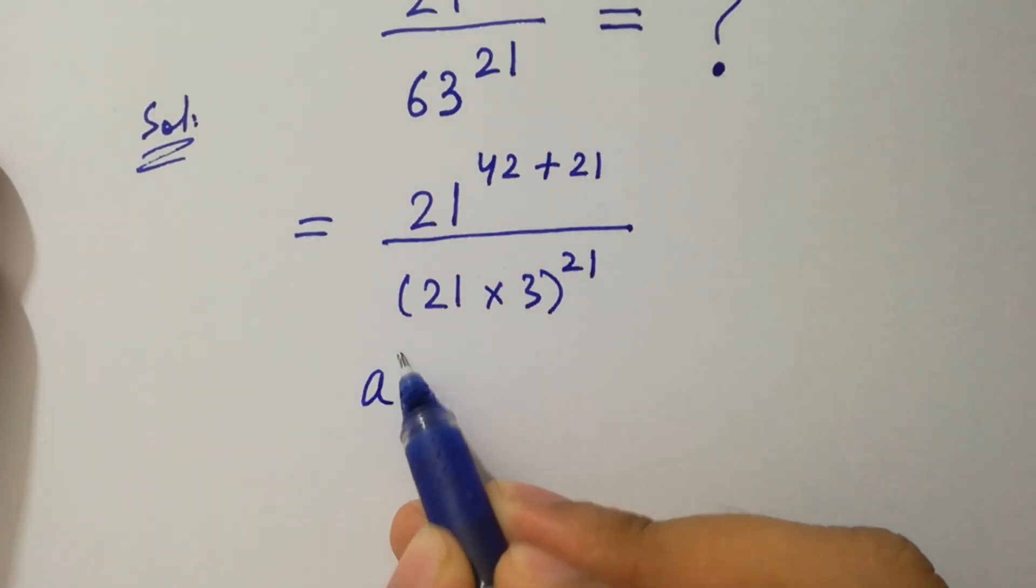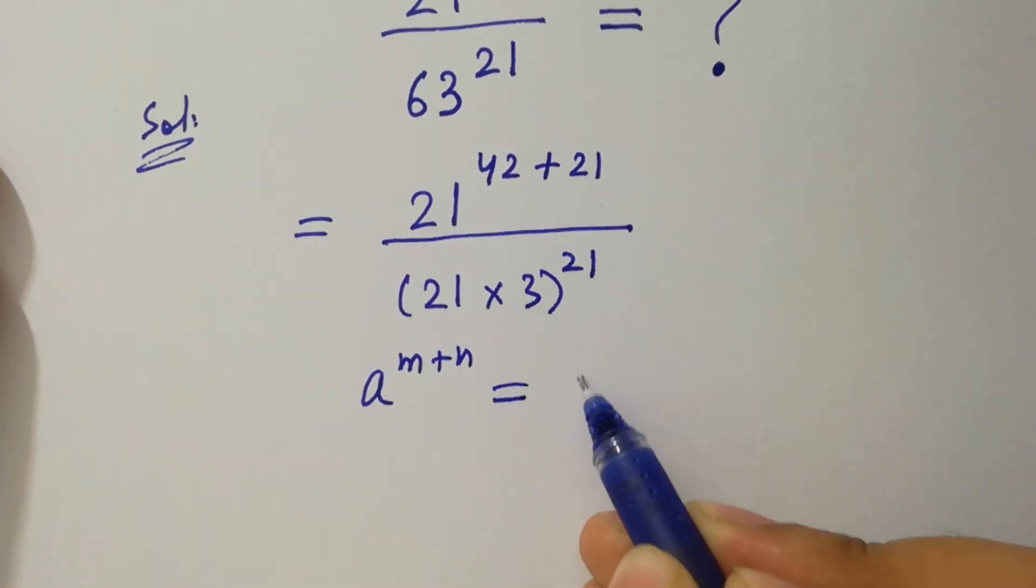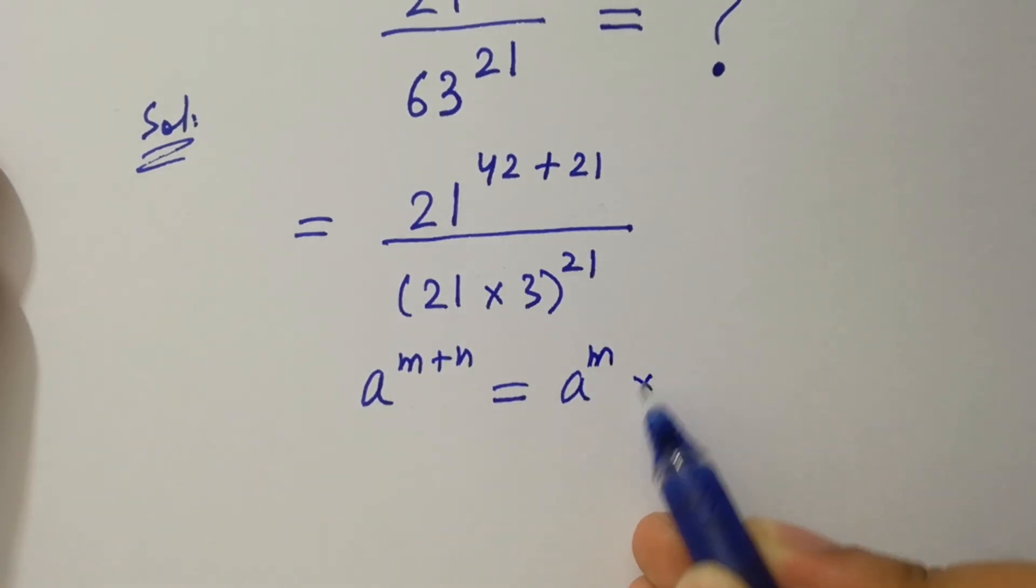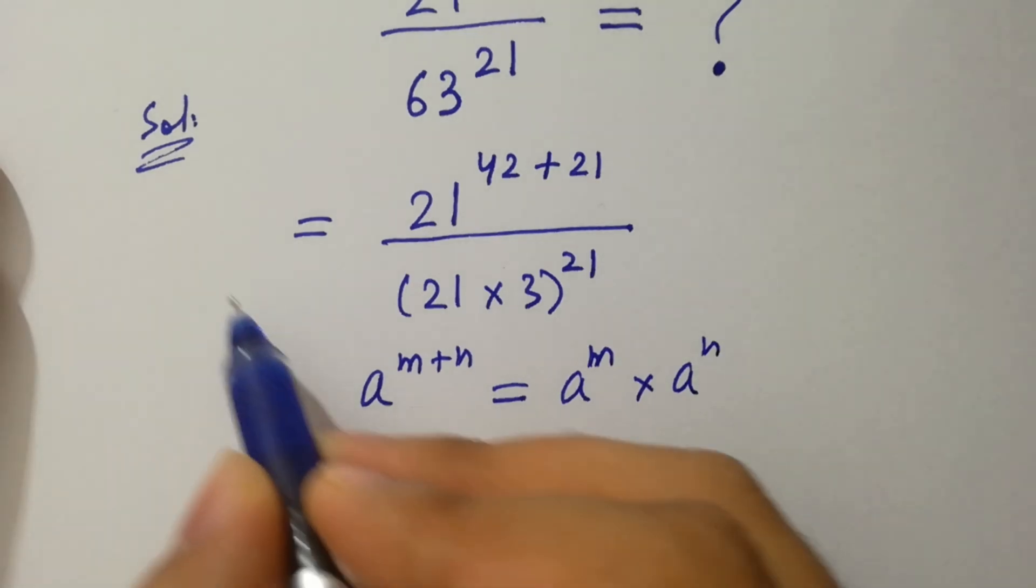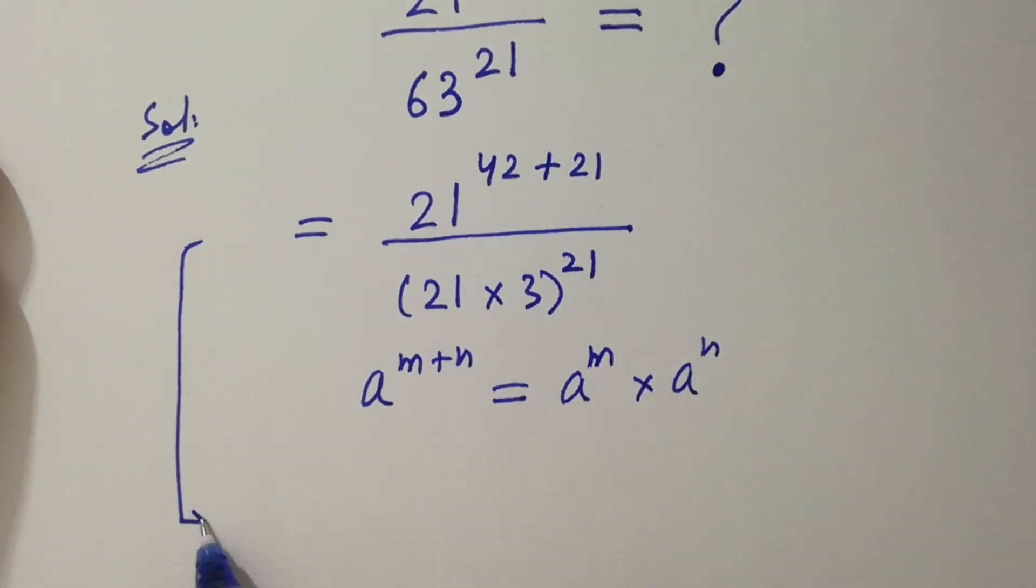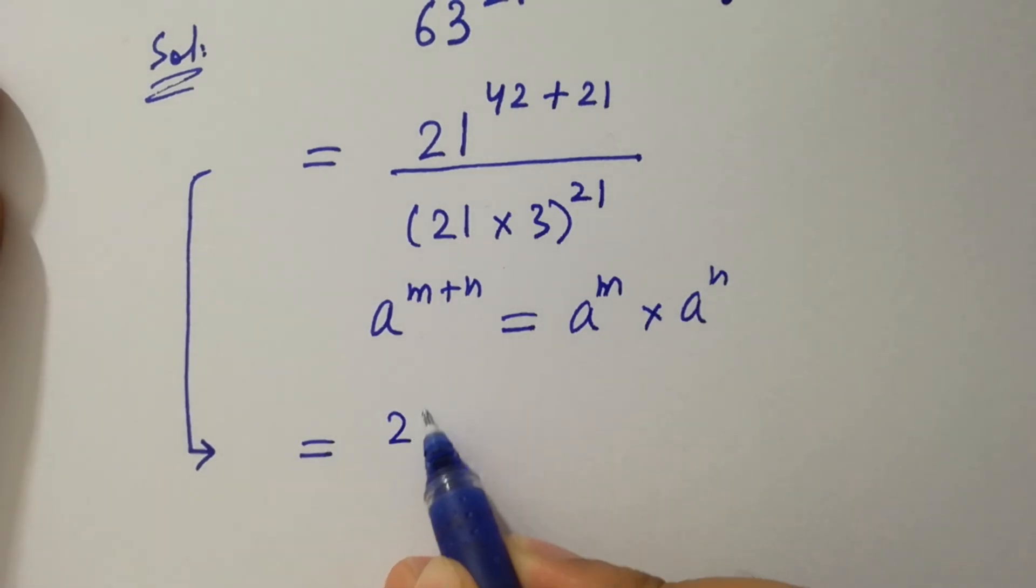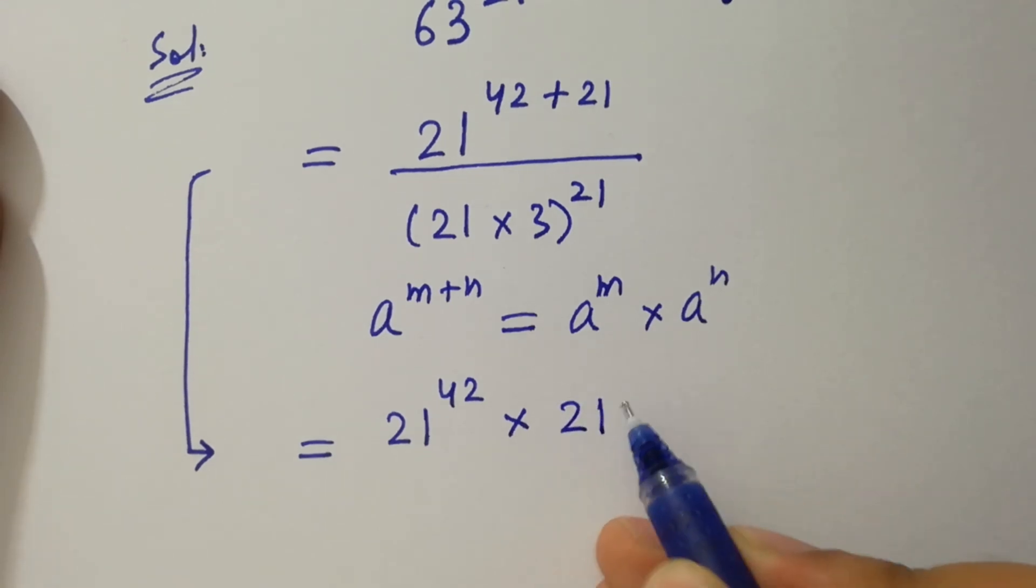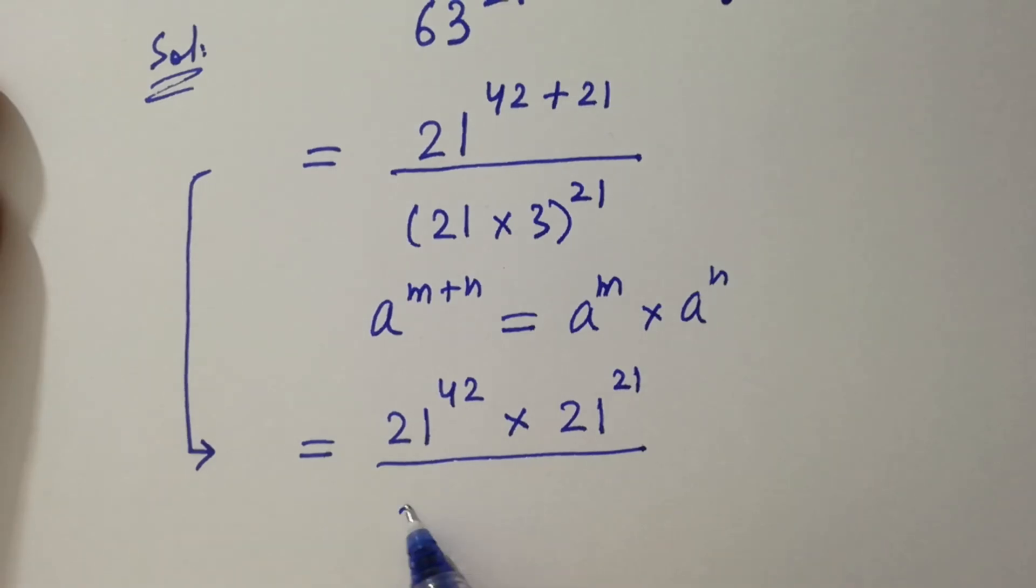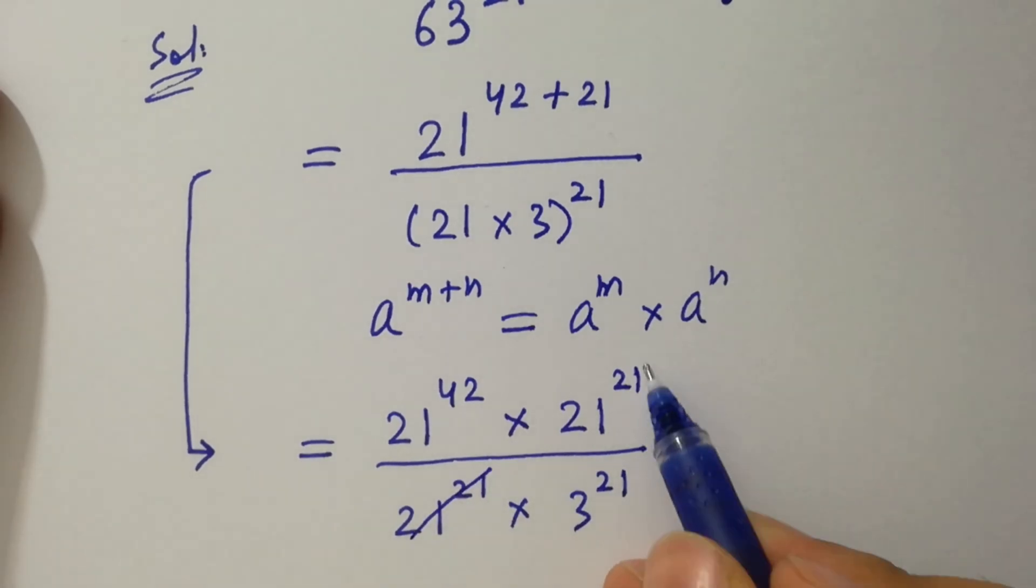As a to the power m plus n equals a to the power m times a to the power n, then it will be 21 to the power 42 times 21 to the power 21 over 21 to the power 21 times 3 to the power 21, where 21 to the power 21 cancels.